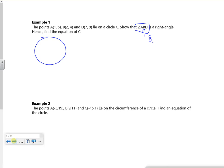So if I have A there, 1, 5. There's B, 3, 4. There's C, 7, 9. So it's not really to scale, but it seems to be working all right. So show that ABD is the right angle, so we need to look at gradients now.